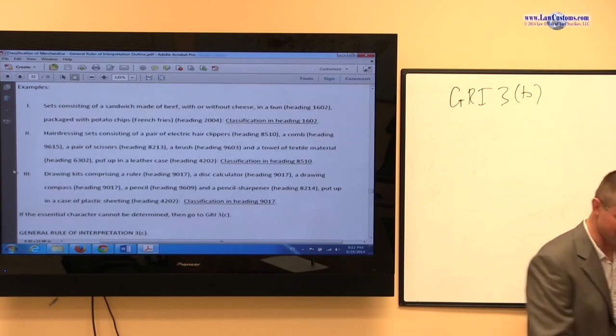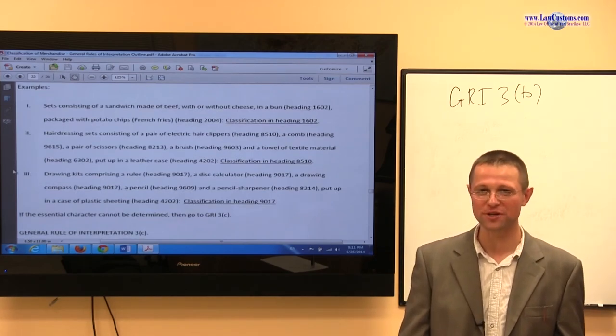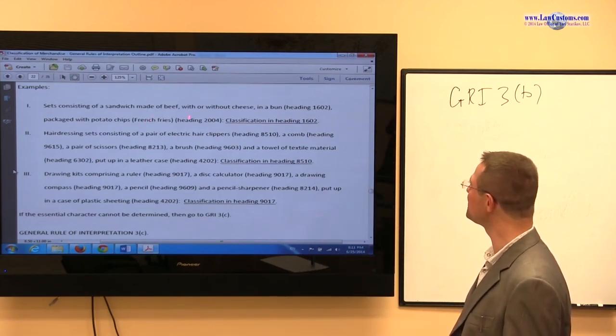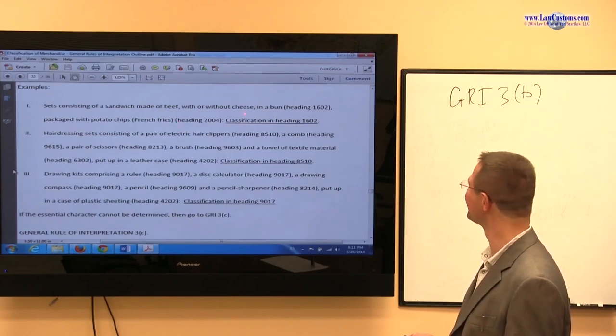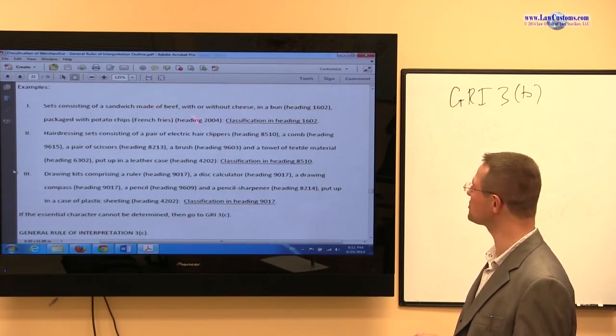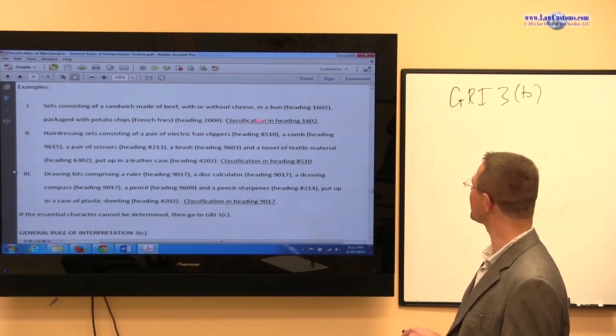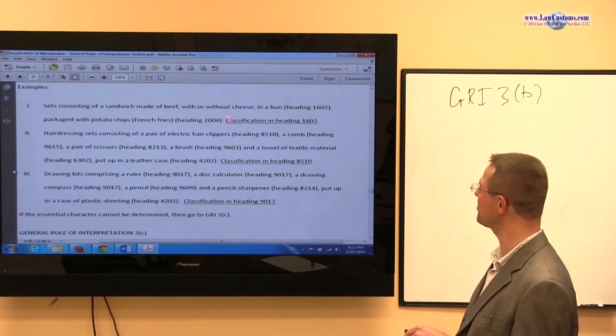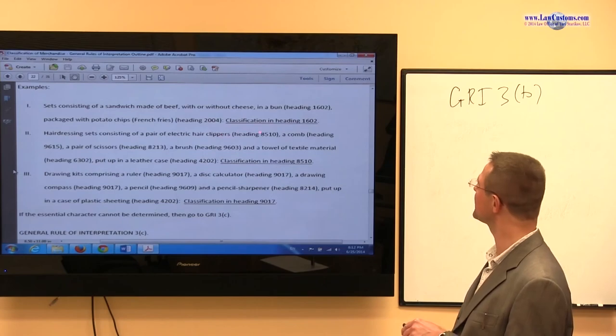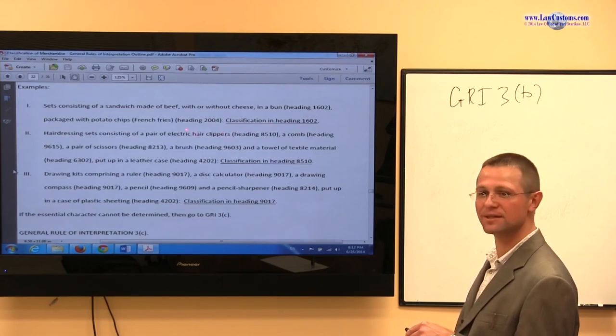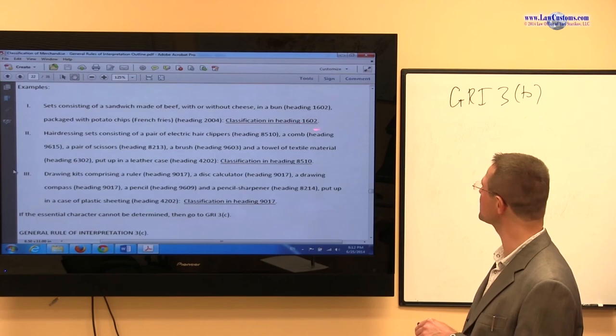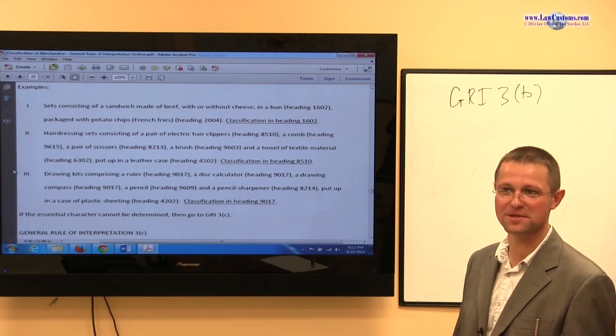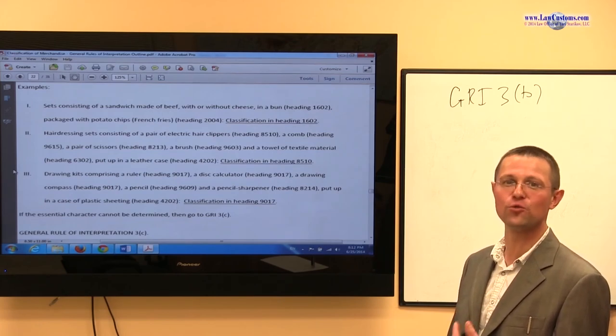Let's look at the examples of sets which have been found to be a set. You have a sandwich made of beef with or without cheese in a bun, and it comes with potato chips. The sandwich is classifiable in 1602, potato chips are classifiable in 2004. It is held to be a set where the essential character is, of course, made by the sandwich, not the potato chips. Makes sense. What's the single particular activity here? Food consumption.